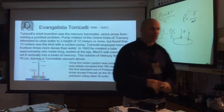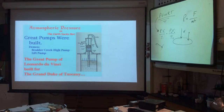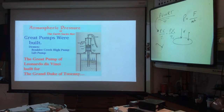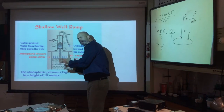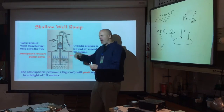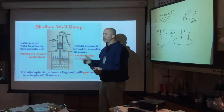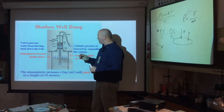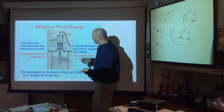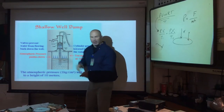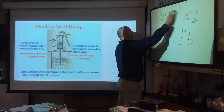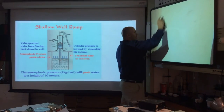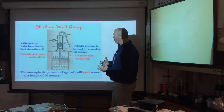What was the problem Torricelli was trying to solve? There was a great pump designed by Leonardo da Vinci for the Grand Duke of Tuscany — a device used to bring water out of a well. Where you have artesian wells with water not too far down, they had a pump with a cylinder. In this cylinder they create something called a partial vacuum. This has everything to do with a measurement of pressure.